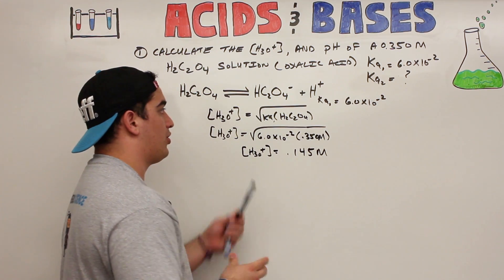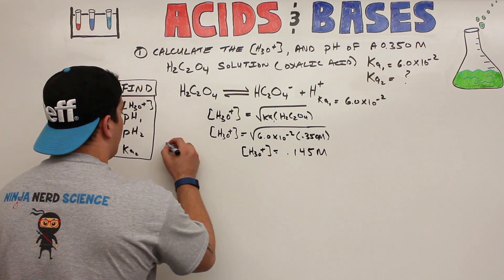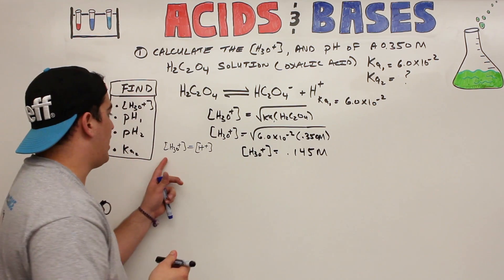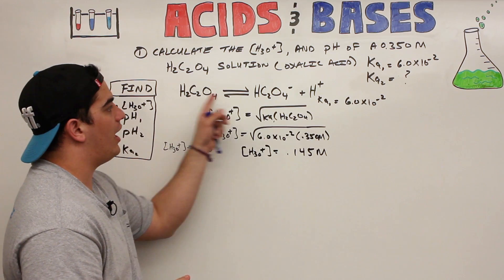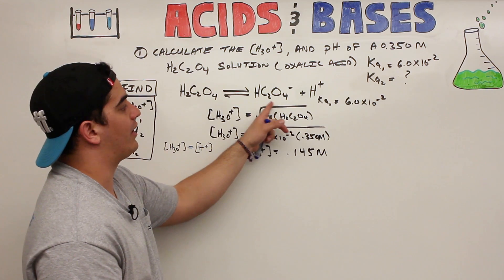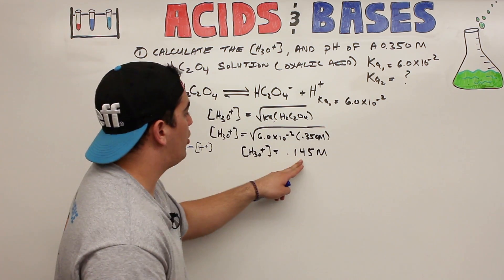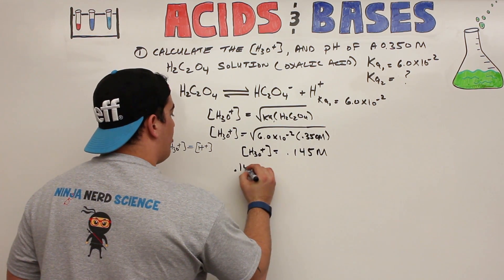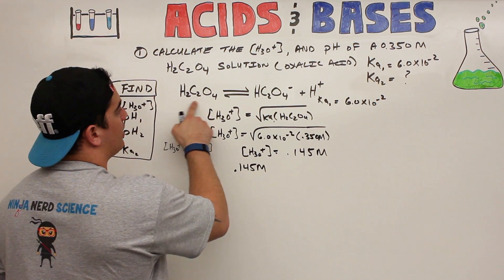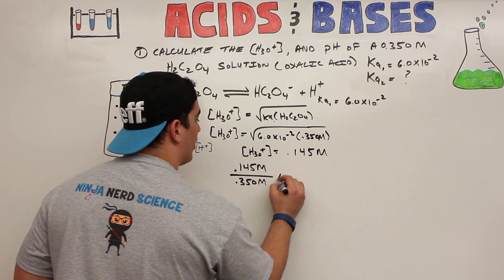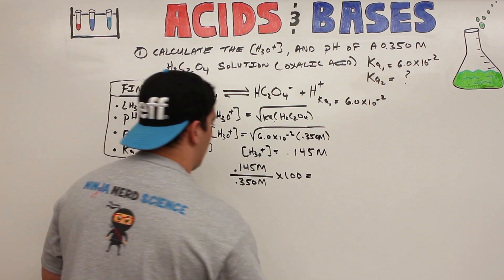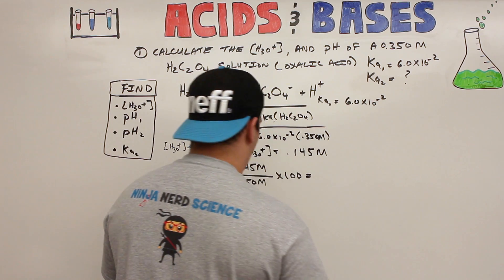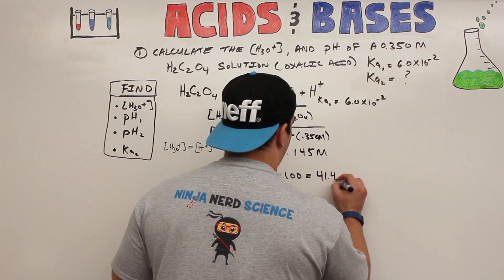H3O⁺ concentration and H⁺ concentration mean the same thing. We never just assume the shortcut answer is correct — we always check it. We take the H3O⁺ concentration at equilibrium (0.145) and divide it by the initial concentration of the weak acid (0.350), multiply by 100. We get 41.4%, which is definitely greater than 5%. So this shortcut didn't work.